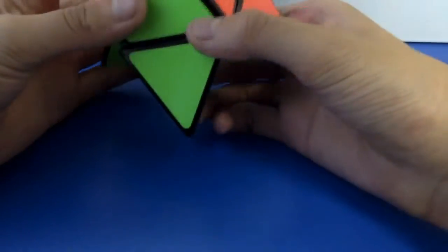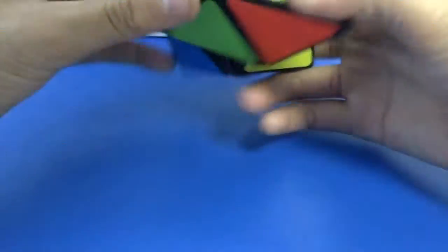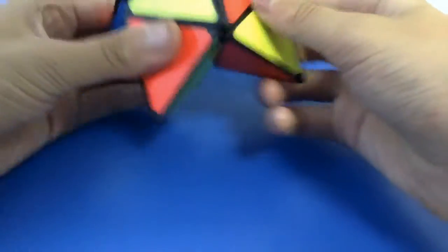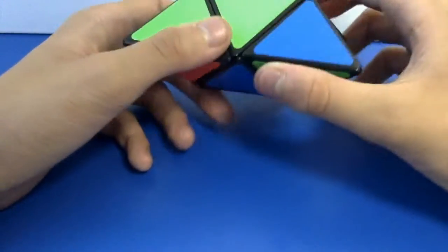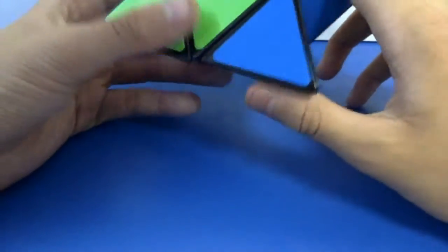So first step, definitely scramble it up. For my first step, you basically, if you're a long time cuber, you should know how to, you should figure out how to solve one side.